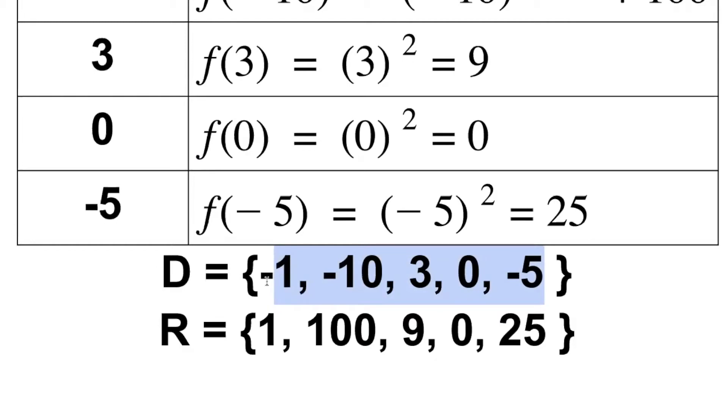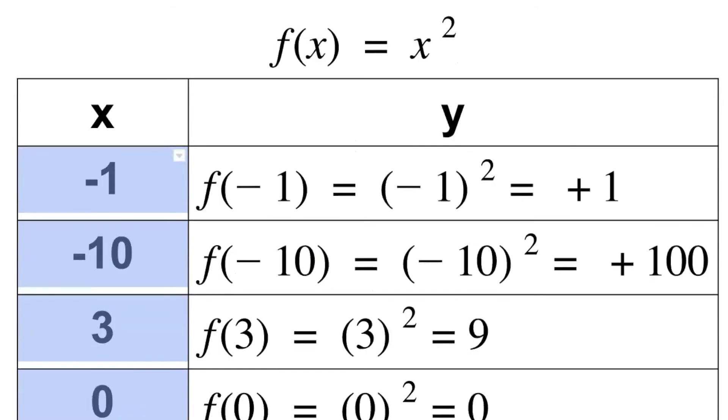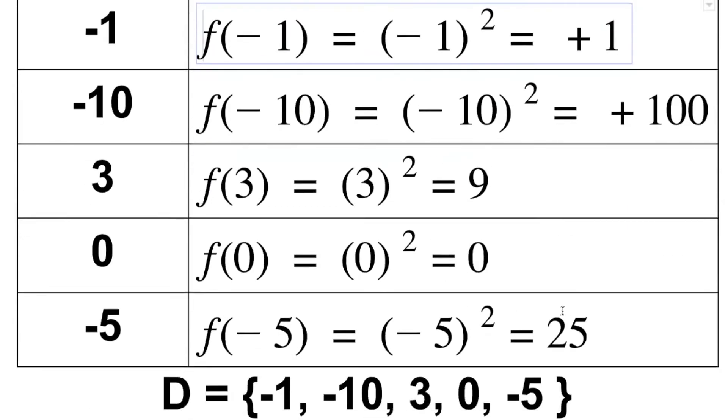For example, if the domain is our names, the domain would be Nasr, Mansoor, Abdurrahman, Khalid, Ali, Faisal, Abdullah. The x values are what you substitute here. It's like when you go to a restaurant and say give me the menu. The values of f(x) are the answers you get when x is 3 or x is 6.